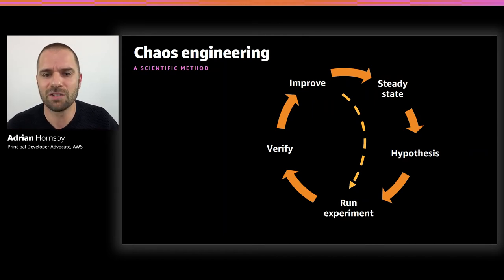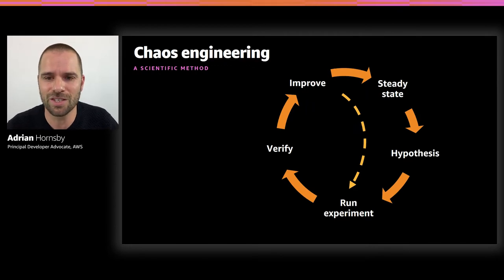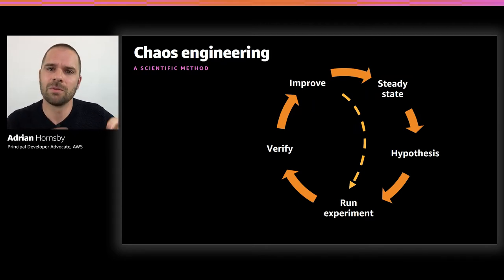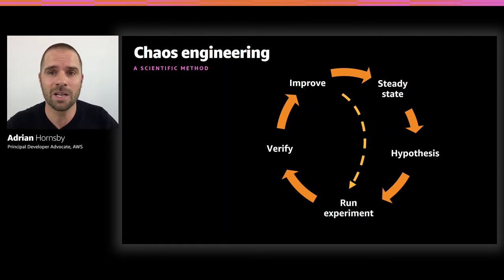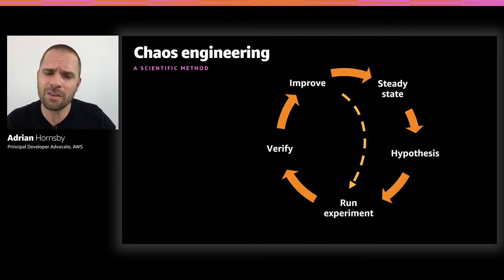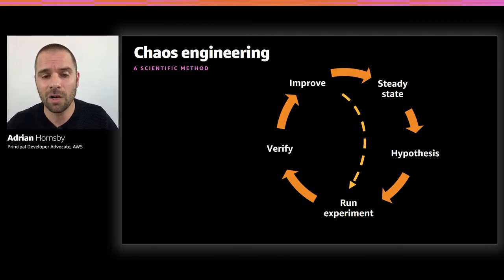Rather than having those disruptive events happen at 3 a.m. when outages usually occur, or during weekends or holidays, and in prod — we want to create those failure injections in a controlled environment, especially during working hours when everyone is in the room and fresh. Chaos engineering always starts with the why: why are we doing this? What is the goal? Is it to improve availability, improve our security posture, or improve our resilience? Answering the why will help you formalize your hypothesis.